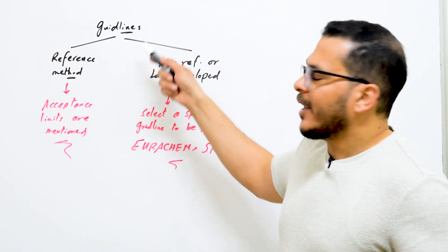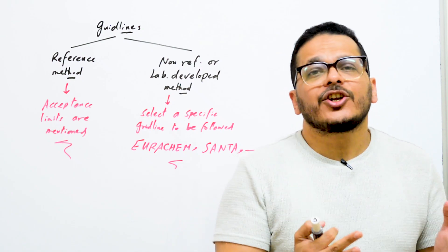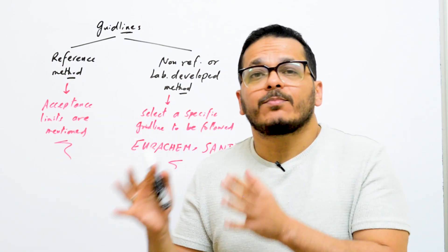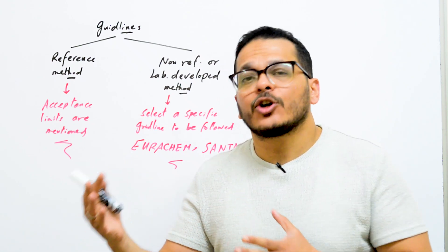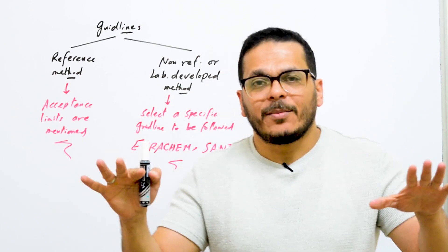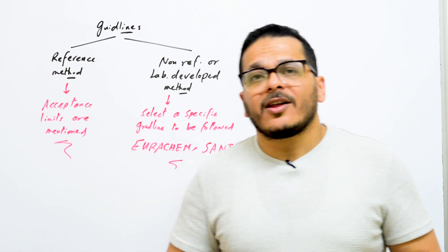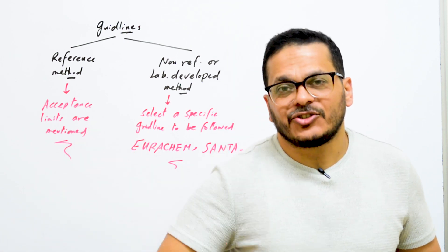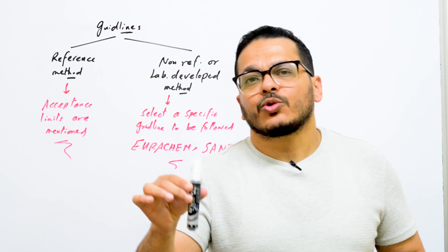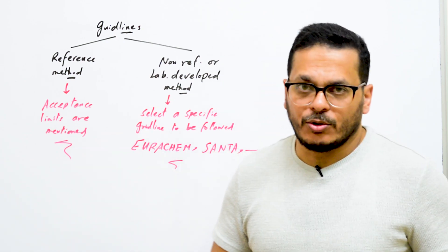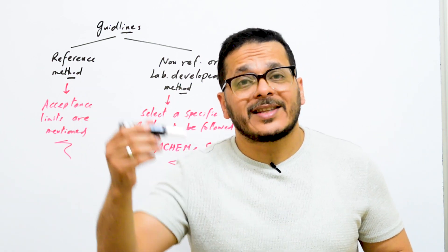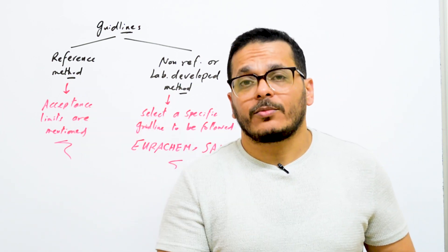We have two types of guidelines: reference methods and non-reference, non-standard, or lab-developed methods. A reference method is a method developed and validated by a group of laboratories and published as a reference method, so any lab can use this method to analyze the same target analytes in the same matrix. You only need to verify some performance parameters to ensure that you can get accurate results using this method.